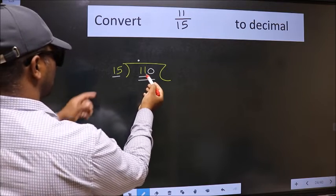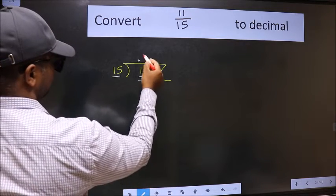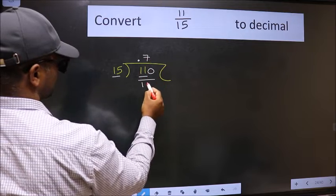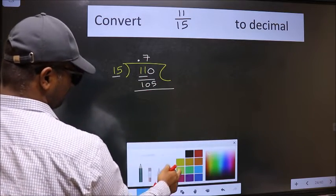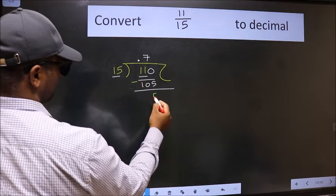A number close to 110 in the 15 table is 15 sevens, 105. Now we should subtract. We get 5.